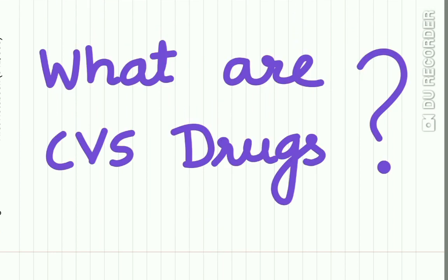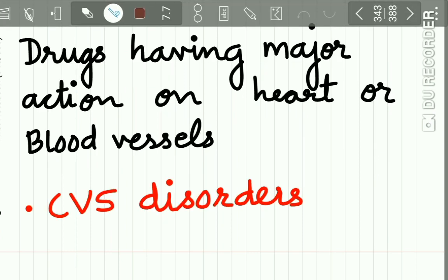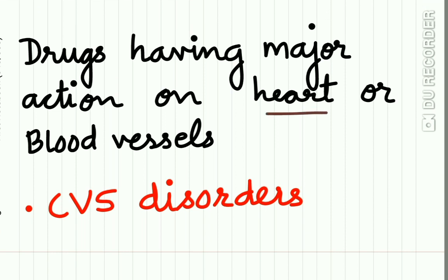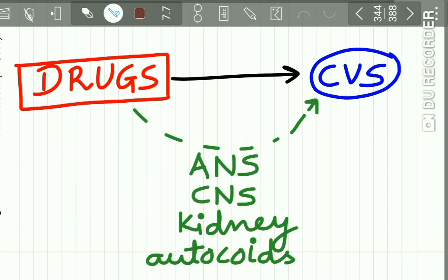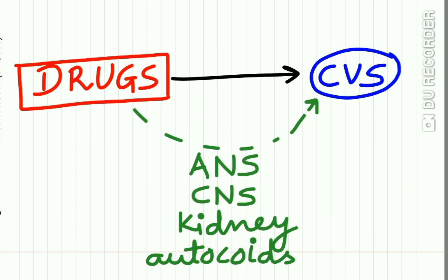Let's begin today's lecture. What are CVS drugs? The drugs having their major action on the heart and blood vessels, or the drugs which are primarily used for CVS disorders, are called CVS drugs. These CVS drugs may directly act on the CVS or indirectly act through the autonomic nervous system, central nervous system, kidney, or autocoids.